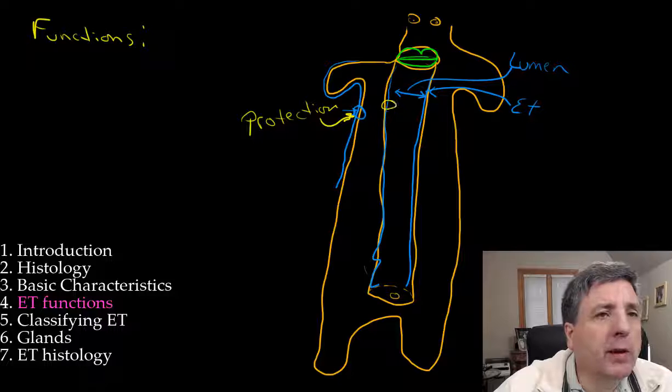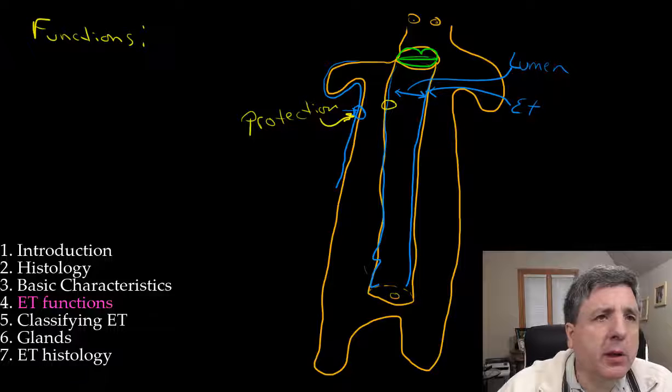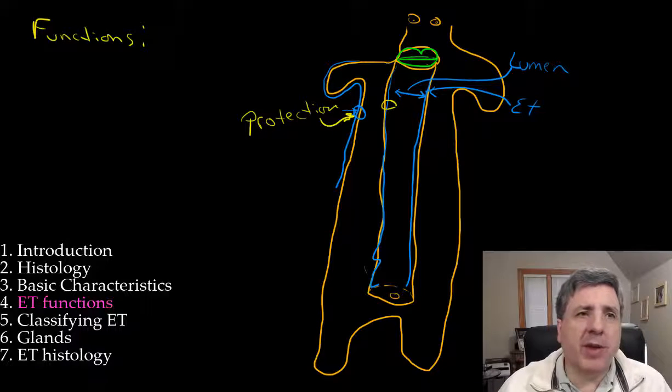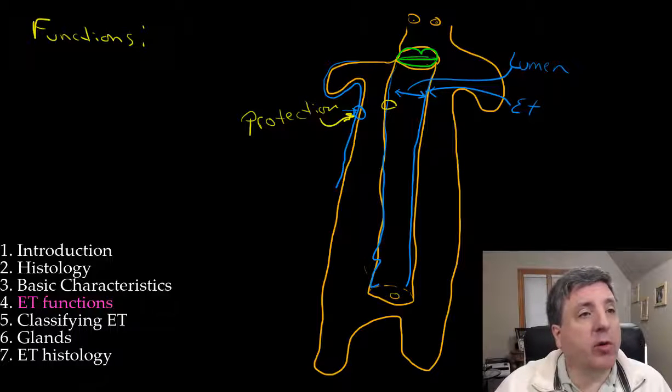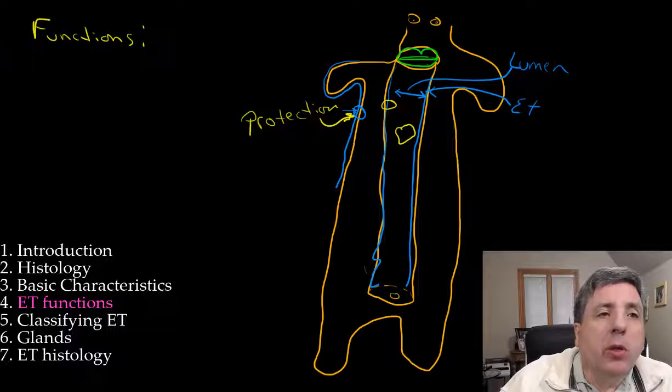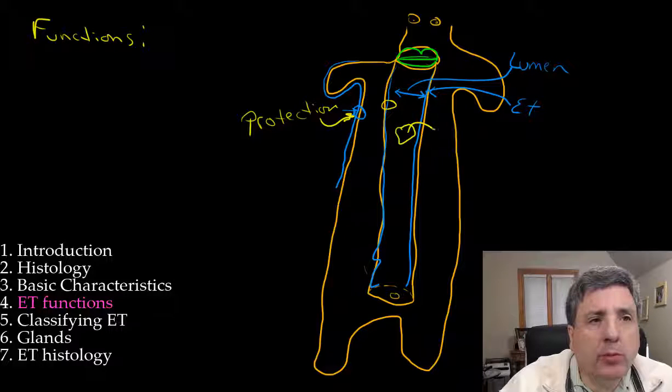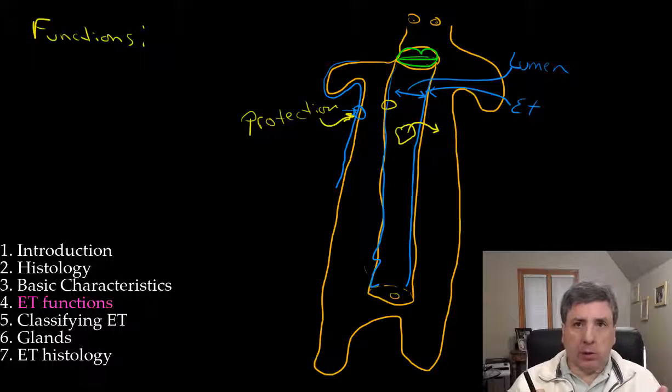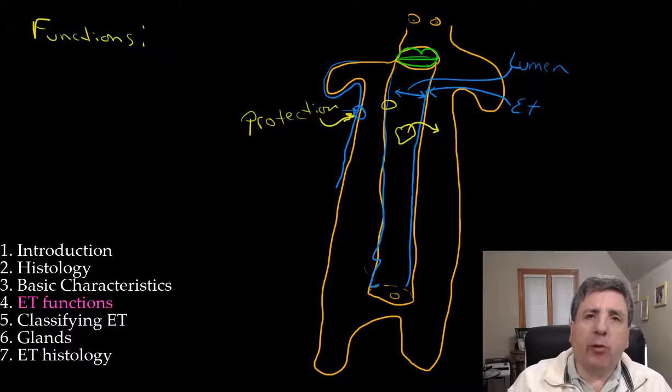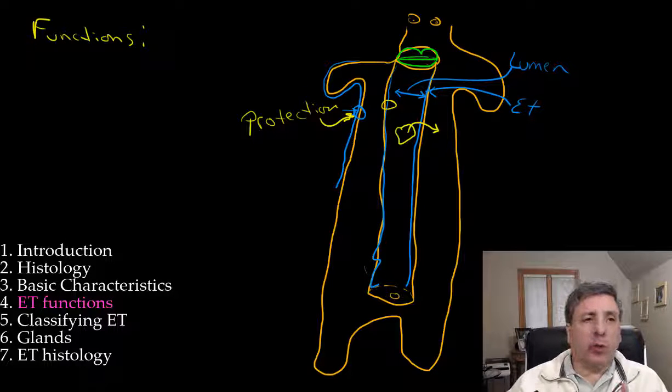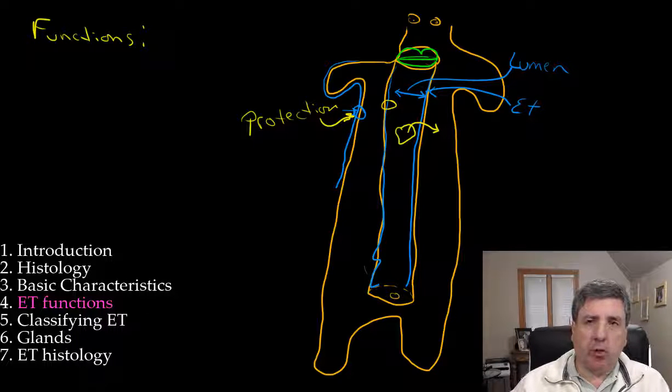So we're looking at that epithelial tissue is going to be selectively permeable. It's going to allow things to come in or absorb things, or it will secrete things. So another function we have here: part of the function of epithelial tissue is for absorption.